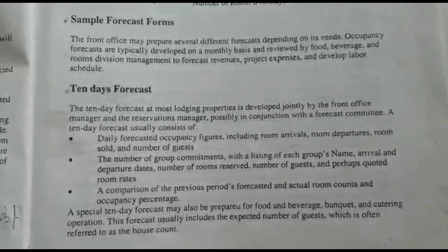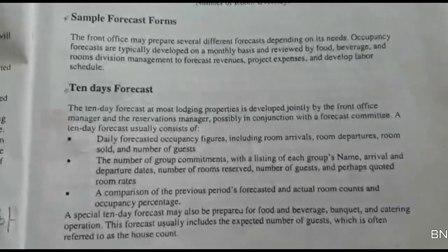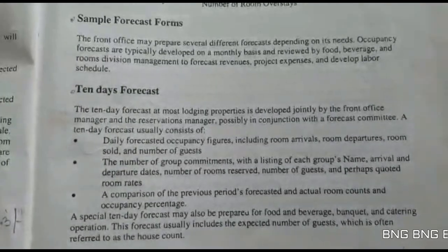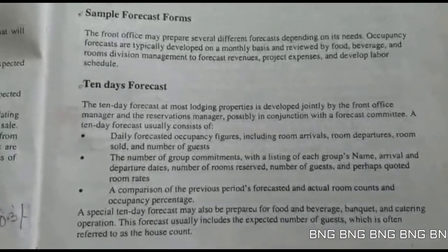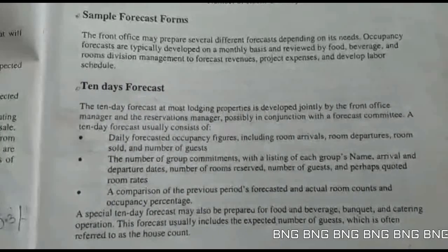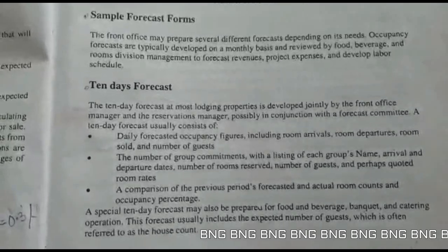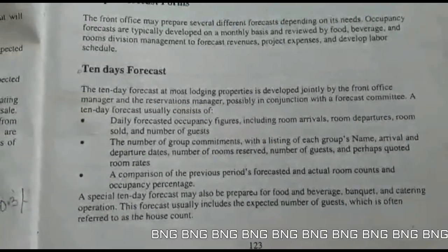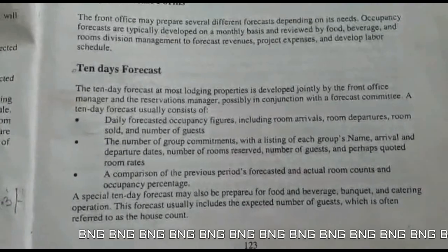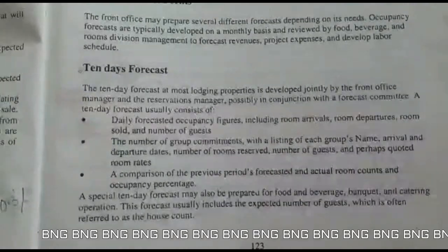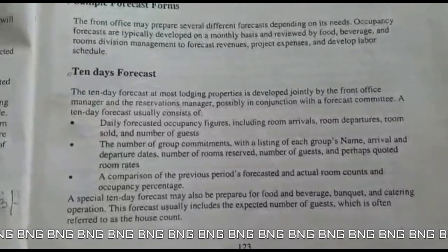We will now talk about a 10-day forecast. A forecast form is prepared by the front office as well as several other departments depending on its need. Occupancy forecasts are typically developed on a monthly basis and reviewed by food and beverage and rooms division managers to forecast revenue, project expenses, and develop labour schedules. A 10-day forecast at most lodging properties is developed jointly by the front office manager and the reservations manager, possibly in conjunction with a forecast committee.